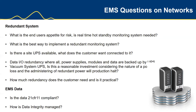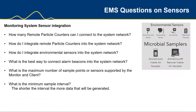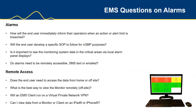Looking at EMS data: is the data 21 CFR Part 11 compliant? How is data integrity managed? If you look at the sensors, how many remote particle counters can I connect to the system network? How do I integrate remote particle counters into the system network? How do I integrate environmental sensors? What is the best way to connect alarm beacons into the system network? What is the maximum number of sample points or sensors supported by the monitoring client and software? What is the minimum sample interval — the shorter the interval, the more data will be generated. Looking at alarms: how will the end user immediately inform operators when an action or alert limit is breached? Will the end user develop a specific SOP to follow for cGMP purposes? Is it important to see monitoring system data in critical areas via local alarm panel displays? Do alarms need to be remotely accessible — SMS, texts, or emails? For remote access: does the end user need to access data from home or off-site? What is the best way to view the monitor remotely? Will an EMS client run on a virtual private network? Can I view data from a monitor or client on an iPad or iPhone?